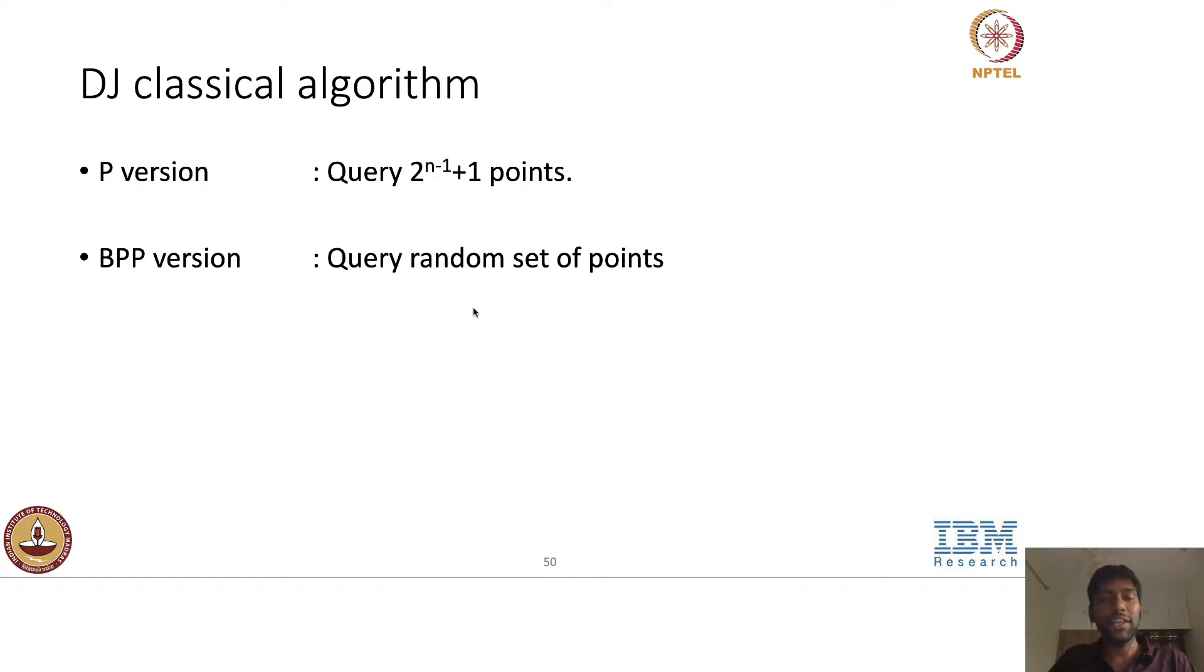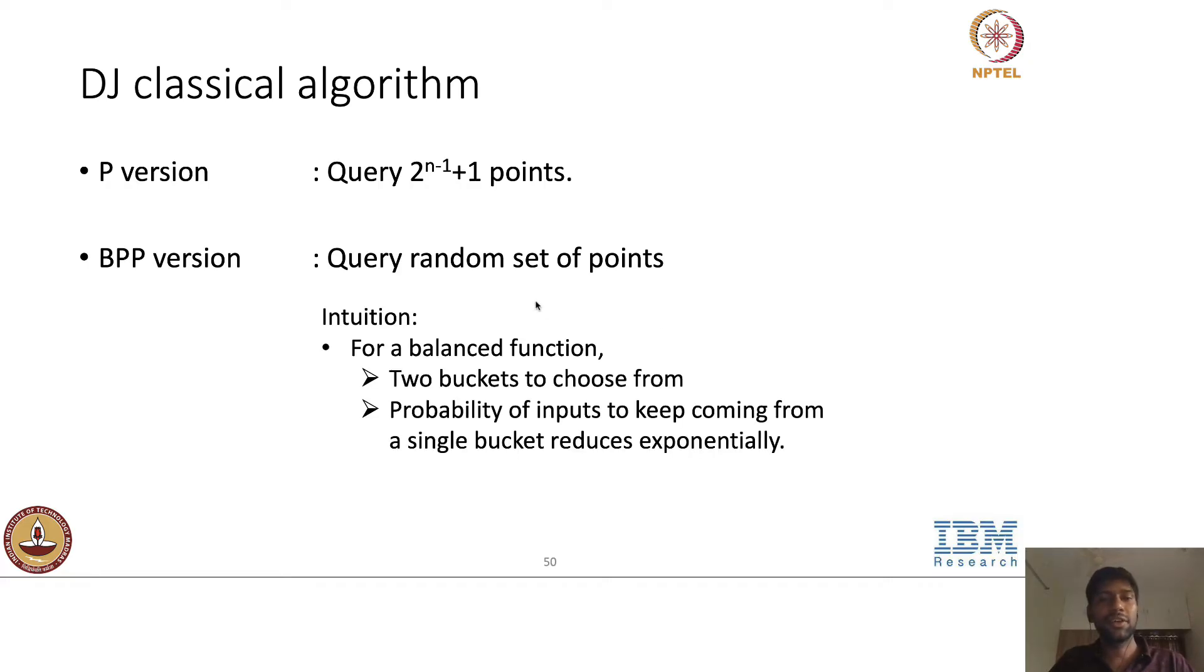You just query the function on some random set of points. So if you do that, even for a balanced function, the classical algorithm can solve within polynomial time. So the intuition behind there is just simple. For a balanced function, we know that half of the inputs output zero and half of the inputs output one.